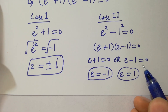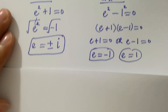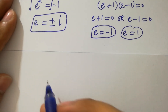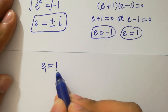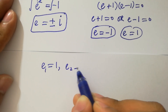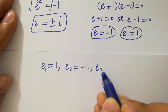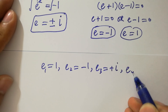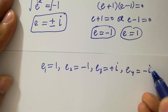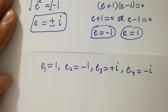So we have four solutions: e1 equals 1, e2 equals minus 1, e3 equals plus i, and e4 equals minus i. In the next step, I am going to verify these solutions.